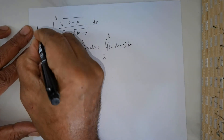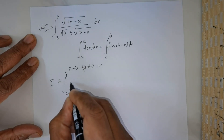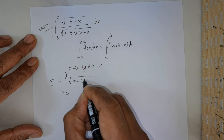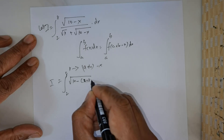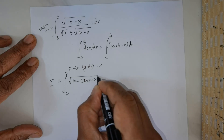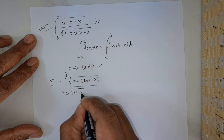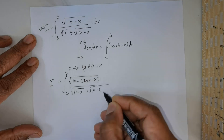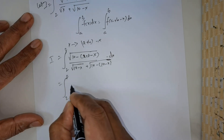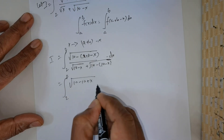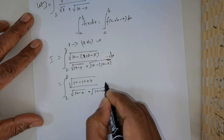So this is going to be — I am going to take this as I. I will be equal to the integral from 2 to 8 of √(10 - x) divided by, applying the property with a + b = 2 + 8 = 10, we get √(10 - (10 - x)) over [√(10 - x) + √(10 - (10 - x))] dx. This simplifies to the integral from 2 to 8 of √(10 - x) divided by [√(10 - x) + √x] dx.